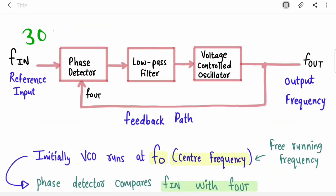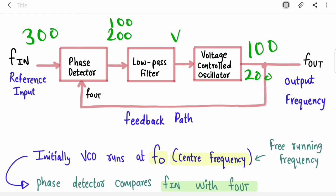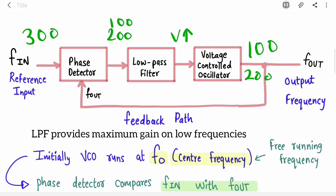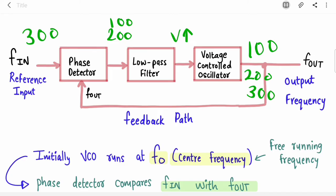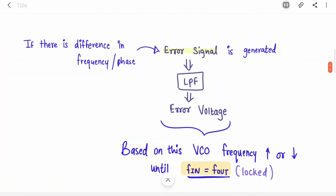For example: suppose f_in is 300 and VCO frequency is 100. The difference is 200, so an error voltage is generated and VCO frequency increases to 200. Now 300 minus 200 equals 100 — the difference is reduced. The error voltage keeps increasing the VCO frequency until f_out also reaches 300. Now f_in equals f_out, the error is zero, and the loop is locked.